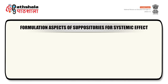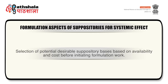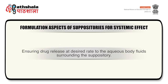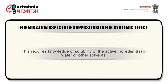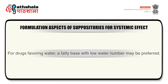Now we will discuss the formulation aspects of suppositories for systemic effect. These involve selection of potential desirable suppository bases based on their availability and cost before initiating formulation work. Ensuring drug release at the desired rate to the aqueous body fluids surrounding the suppository requires knowledge of solubility of the ingredient in water or other solvents. For drugs favoring water, a fatty base with low water number may be preferred.